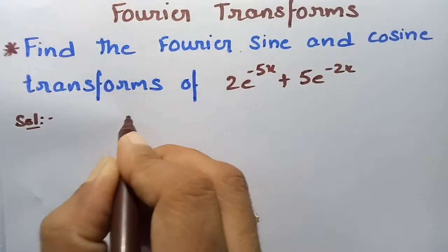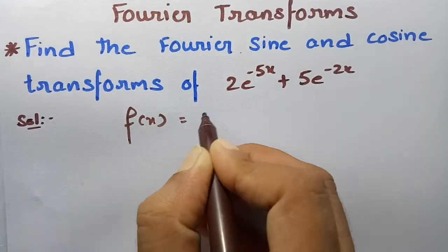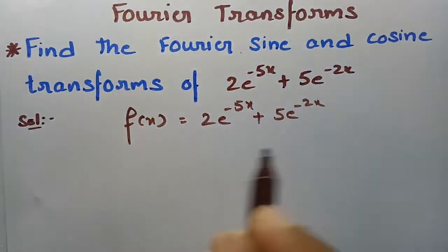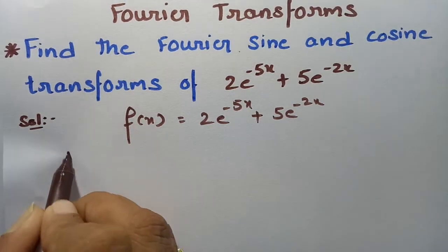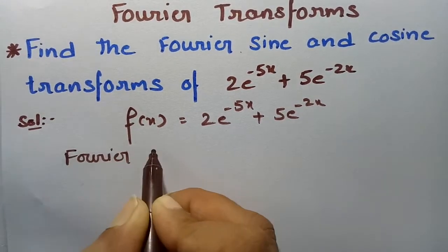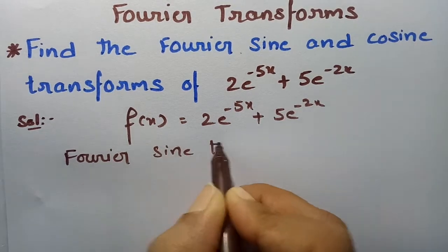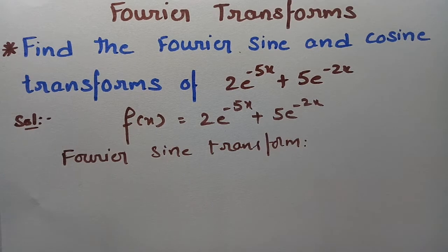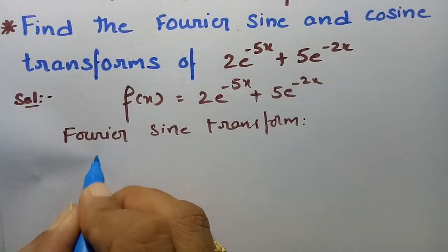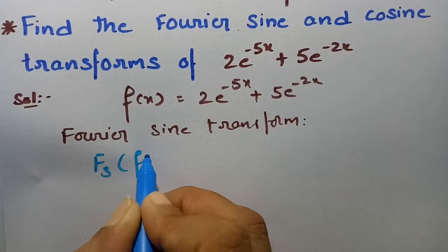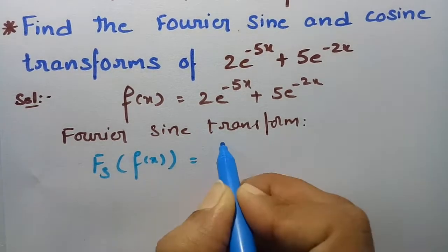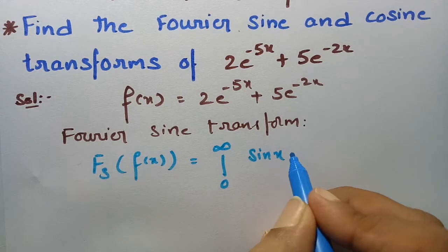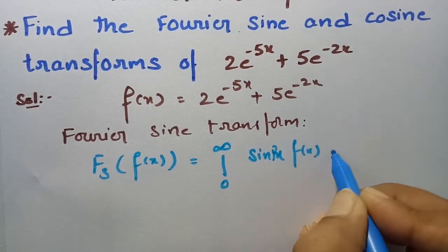First of all, I am going to write what is f of x given. f of x is given as 2 into e power minus 5x plus 5 into e power minus 2x. The Fourier sine transform formula is: Fourier sine transform of f of x is equal to integral 0 to infinity of sin px into f of x into dx.